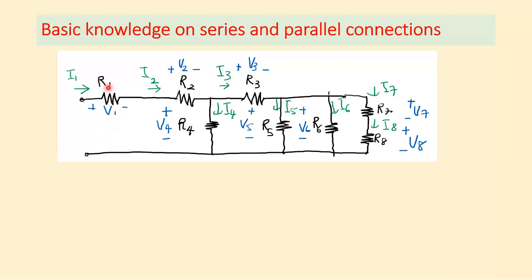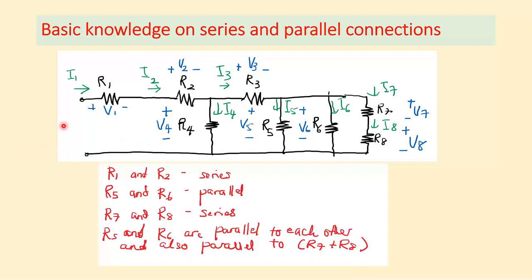Looking at a circuit with R1, R2, R3, R4, R5, R6, R7, and R8: R1 and R2 are in series. The definition of series is that at one node, they are connected with only those two components between them. R1 and R2 are connected at a node with only R1 and R2, so they are in series.